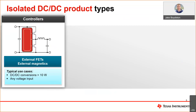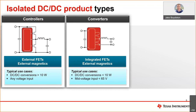Let's start with the first type of isolated DC-DC product that we all are very familiar with — the controller. It has external FETs, external transformer, typically used for loads greater than 10 watts, and can handle most any voltage input. Next, we have the converter, which integrates the FETs, most often used for conversions less than 10 watts, and typically can only handle inputs less than 65 volts.